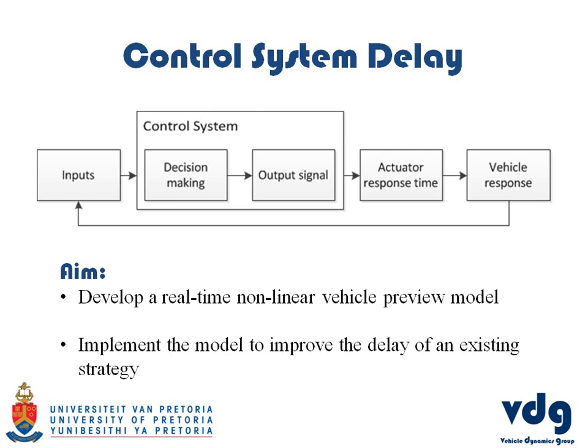These statistics have motivated researchers to develop different control system strategies to improve vehicle handling. Basically, input goes into the control system, a decision is made, and an output signal is sent to the actuators, which have a response time. The vehicle dynamics then take a little while to respond. If we could develop a preview model, we could take the inputs and move them forward in time — predicting what is going to happen and using those predictions to drive the control system.